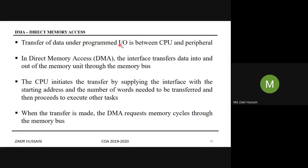Transfer of data under programmed IO is between CPU and peripheral IO devices. In direct memory access, the interface transfers data into and out of the memory unit through the memory bus. This statement needs careful attention — here, CPU is not in the picture. Instead, the interface is coming into the picture.